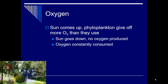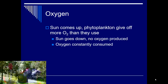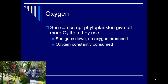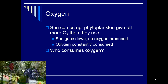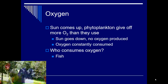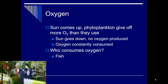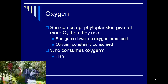Oxygen is constantly being consumed. Most of the organisms that live in a lake are poikilothermic ectotherms — they don't make their own heat, and their body temperature varies — so as the water temperature goes up, oxygen consumption goes up a lot. Who specifically consumes oxygen in a lake? A lot of groups. Of course the fish, but fish, relative to other organisms, do not consume that much oxygen. They're at the top of the food web; there's not as much biomass compared to other levels.